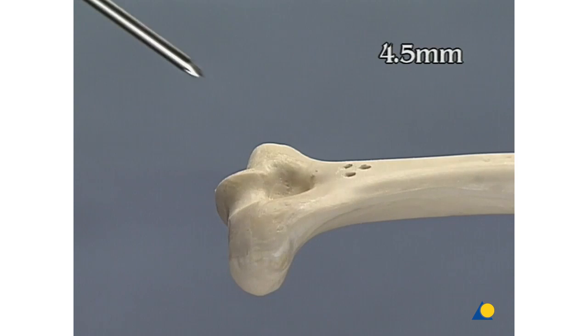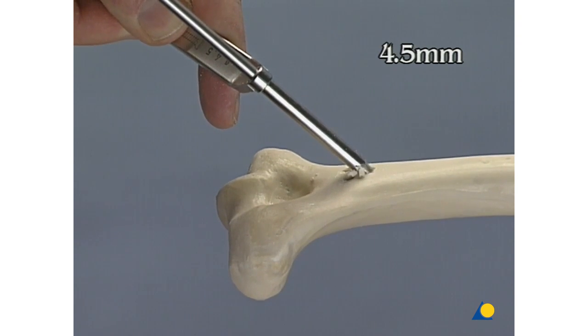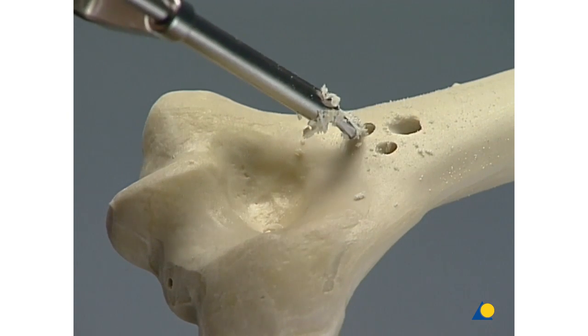Over-drill the holes with the 4.5 millimeter drill bit using the 4.5 millimeter drill sleeve. Once again, do not drill through the far cortex.